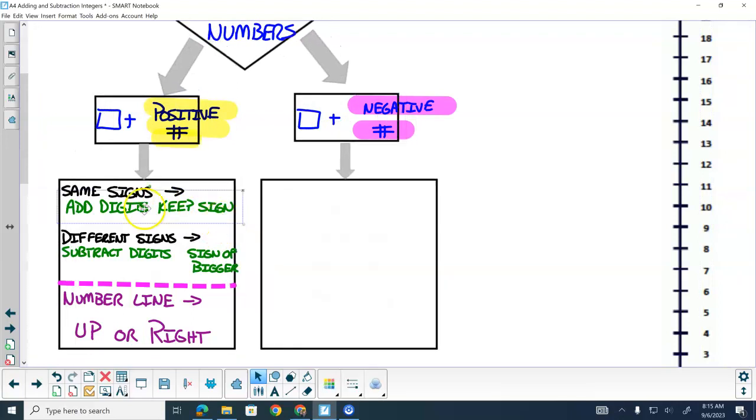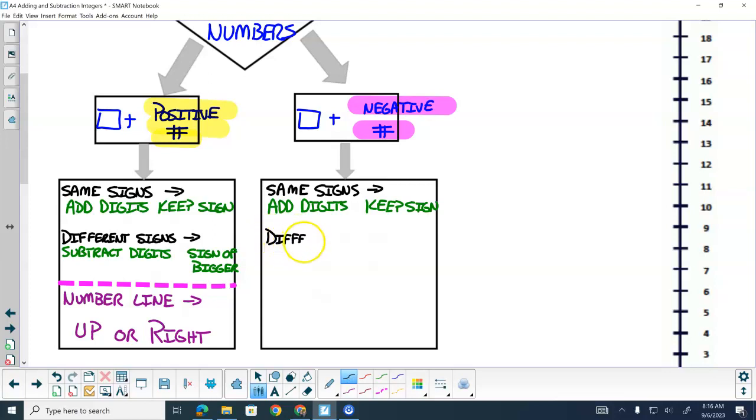Moving all these things around. What if the signs are different? So now we would have a positive adding to a negative. What would we do with the digits? Subtract the digits, sign of the bigger one.